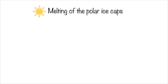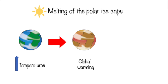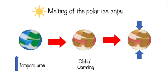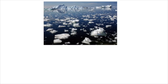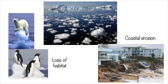Melting of the polar ice caps: world temperatures have increased, causing global warming. This means that the earth's increasing temperatures are melting ice at the north and south poles of the earth. Ice melting into water is a problem because animals who live on the ice are losing their homes, and also with less ice and more water, coasts are being eroded. This is also linked to unusual weather events.